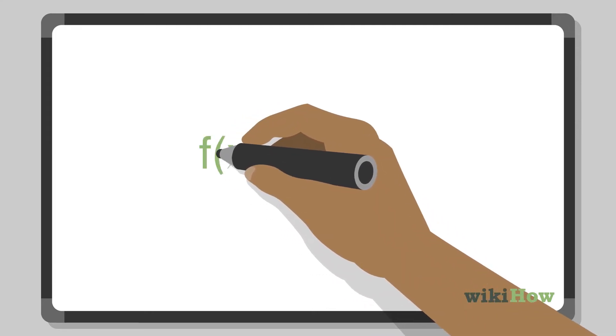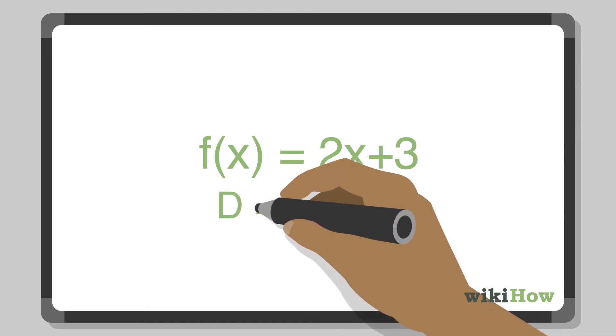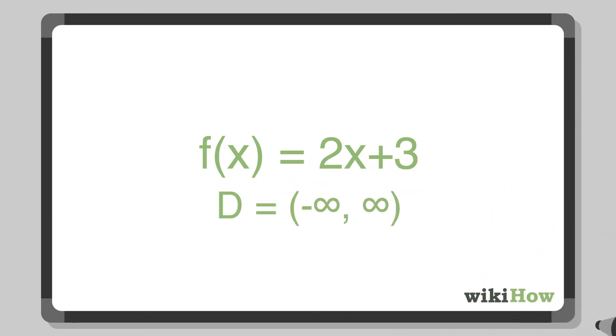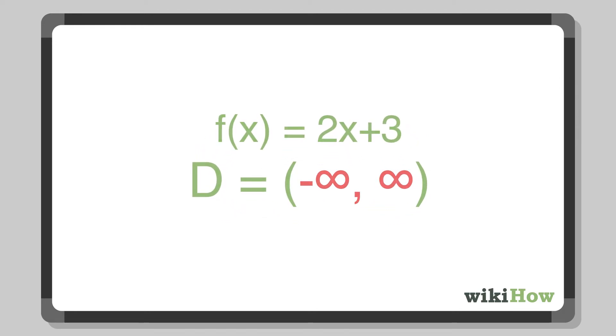For example, if your function is f equals 2x plus 3, then the domain is any number that you can use in place of x. In this example, and with many other functions, the domain includes all real numbers.